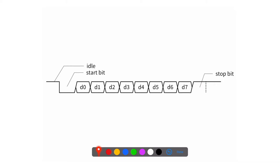The transmitter and receiver must agree on certain things before communication starts. They agree on the number of bits they're sending — for UART, you don't have to send a full byte; you can send six, seven, or eight bits. The number of stop bits is one, one and a half, or two, and that must be agreed upon before transmission begins.